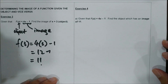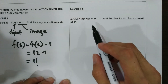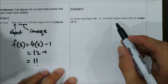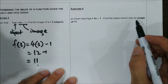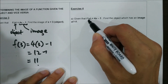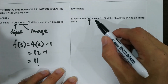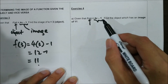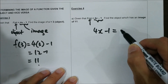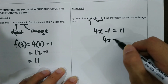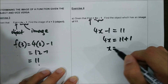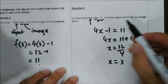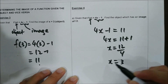For exercise number 4, we are given the same function f(x) equals 4x minus 1. But now we need to find the object when given the image of 11. Since 4x minus 1 is the image, setting it equal to 11: 4x minus 1 equals 11, so 4x equals 12, giving x equals 3. So when the image is 11, the object x equals 3.